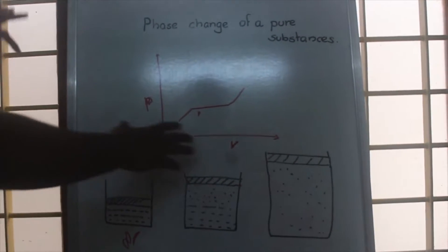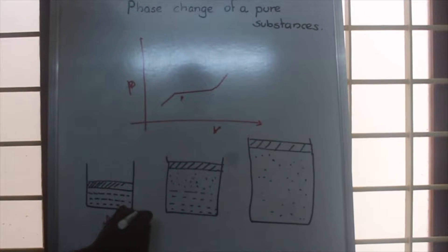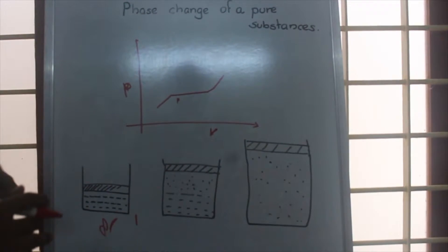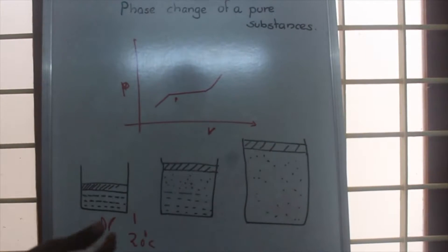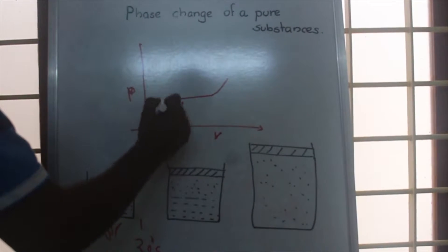If we are plotting the PV diagram, what we see is suppose this is condition one. At condition one, let the water be at temperature 20 degrees Celsius. If we heat, it will change from one to two.